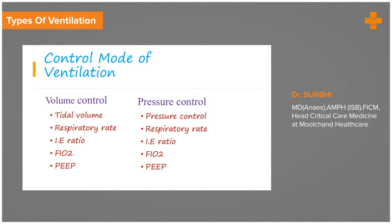In Pressure Control, we set the pressure control and at the same time we keep monitoring how much tidal volume the patient is generating. In Volume Control, when we set the tidal volume we should keep an eye on the airway pressures. In Pressure Control, we set the pressure and look for how much tidal volume is generated; accordingly we can set the respiratory rate to reach a targeted minute volume, I:E ratio, and FiO2.